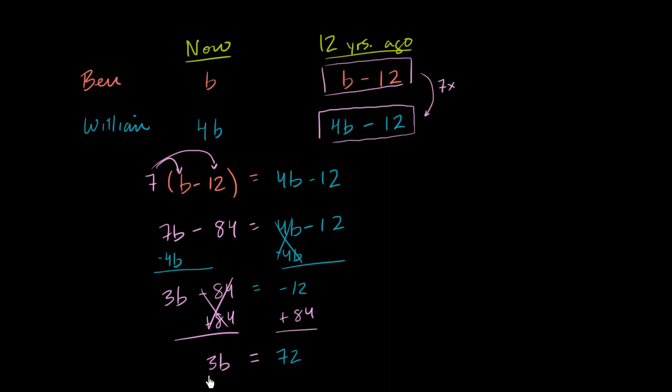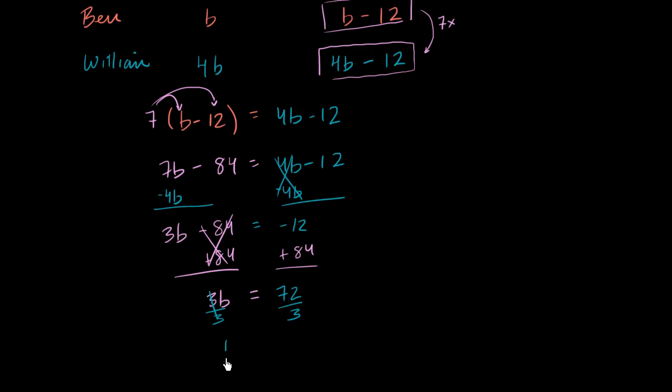Now if I want to solve for b, I just have to divide both sides of that equation by three. And so I am left with b is equal to seventy-two divided by three. And you might be able to do that in your head. It would be twenty-four I believe.